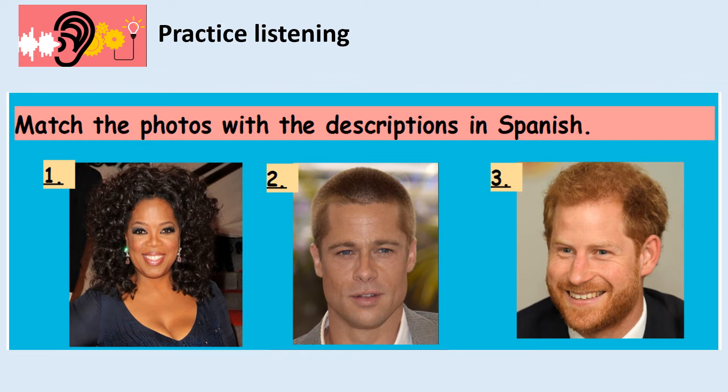This is description A. Es pelirrojo y alto. Lleva barba. Tiene los ojos azules. Which photo is it? One, two or three.